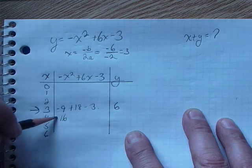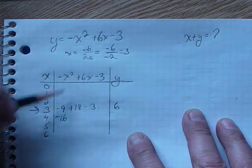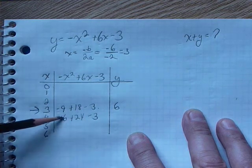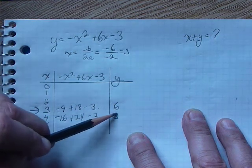4 squared is 16, the minus goes in front. 4 times 6 is 24, and bring down our minus 3. This is a positive 8 minus 3, that's positive 5.